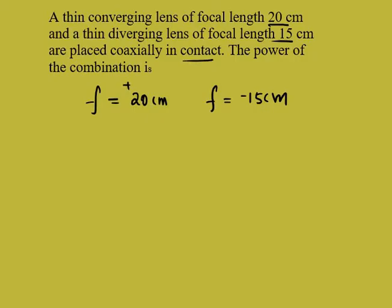So the power of the combination is, you know the power of the combination will be P equals 1 by, let us mark the first lens as f1, another one as f2.